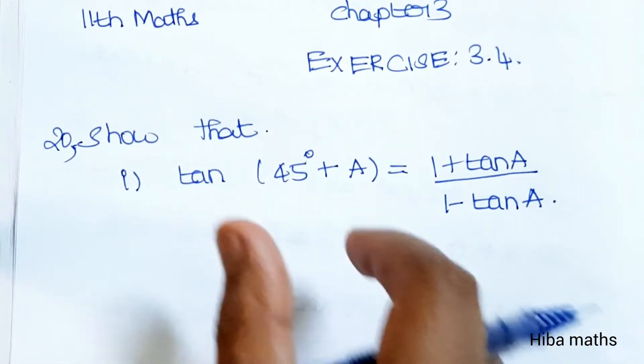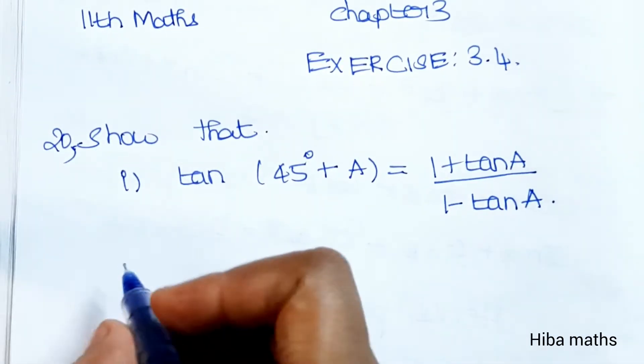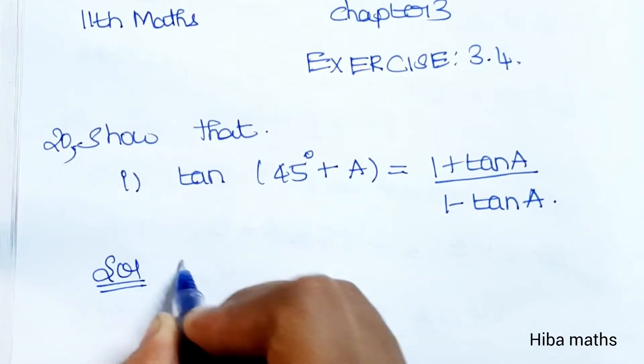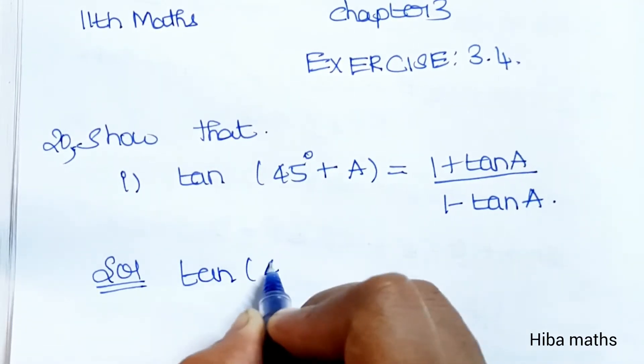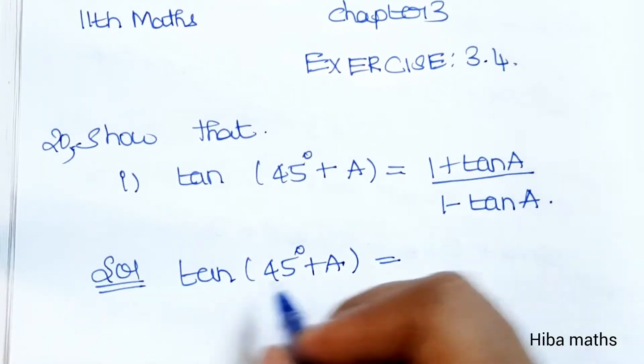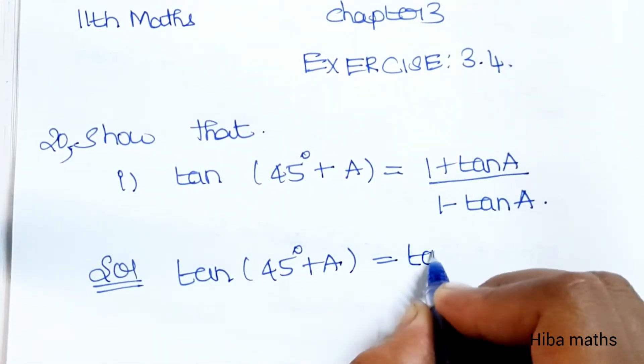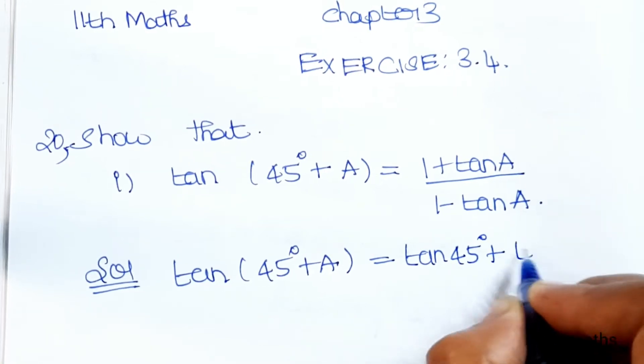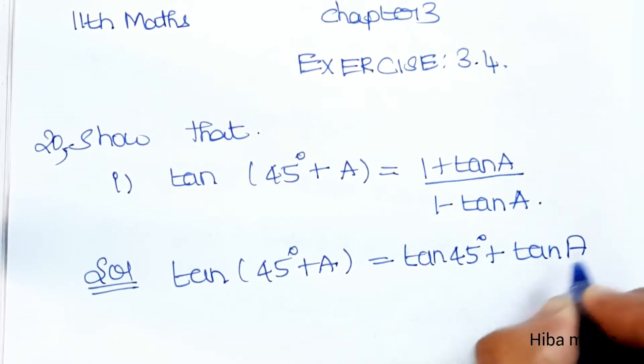Solution: LHS = tan(45° + A). Applying the tan(A + B) formula: (tanA + tanB) divided by (1 - tanA·tanB). Here A is 45° and B is A, so we get (tan45° + tanA) divided by (1 - tan45°·tanA).